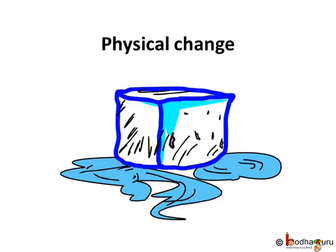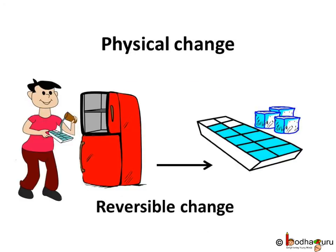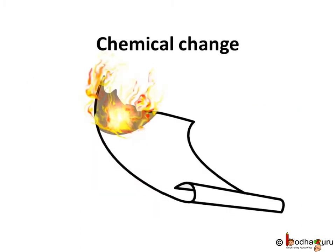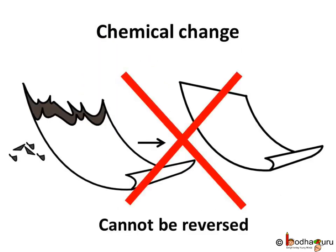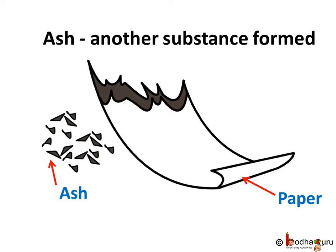As we know, when ice is melted, water is formed and the water can be changed into ice by freezing. So it is a reversible change and we call it a physical change. But when a paper is burnt, we cannot get back paper from the burnt paper — that is ash. We call it an irreversible change or a chemical change.